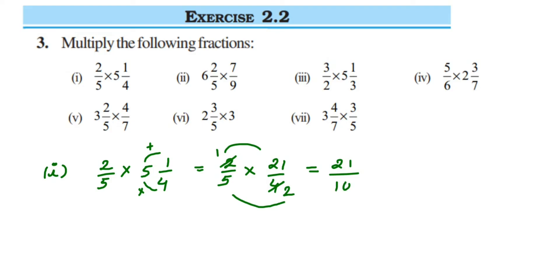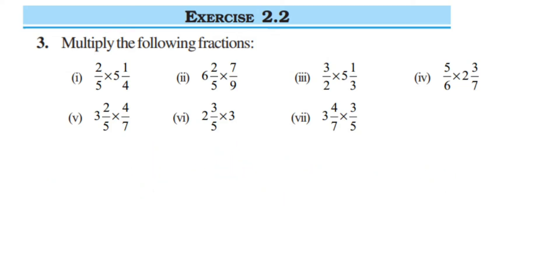We cannot cancel further, so multiply: 1 times 21 is 21, and 5 times 2 is 10, giving 21/10. But this is an improper fraction since the numerator is greater than the denominator, so we convert back to a mixed fraction. We need a number close to 21 in the 10 times table: 10 twos are 20. To get 21 we add 1 more, so the answer is 2¹/10.